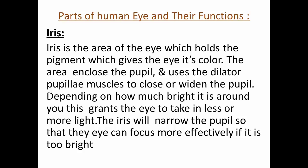Iris. The iris is the area of the eye which holds the pigment that gives the eye its color. The area encloses the pupil, and uses the dilator pupil muscles to close or widen the pupil. Depending on how bright it is around you, this allows the eye to take in less or more light. The iris will narrow the pupil so that the eye can focus more effectively if it is too bright.